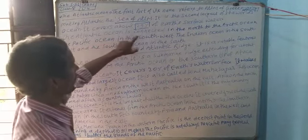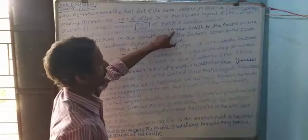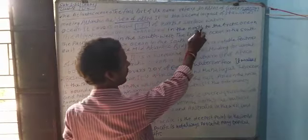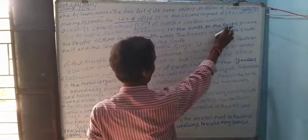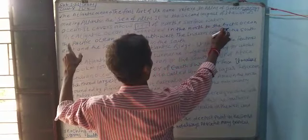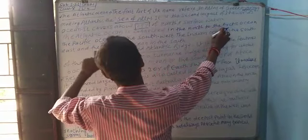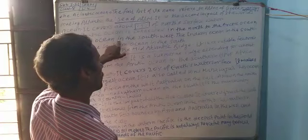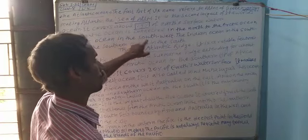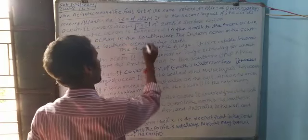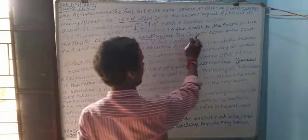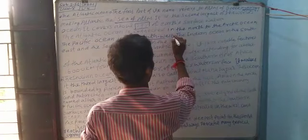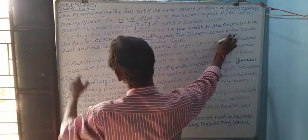The Atlantic Ocean is connected to the North, which is connected to the Arctic Ocean. The Pacific Ocean is connected to the Pacific Ocean, and the Indian Ocean is in the South.